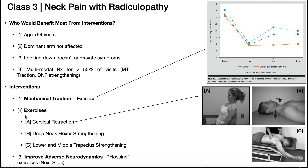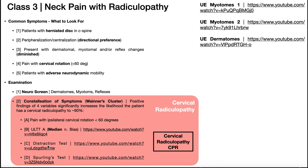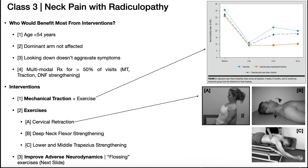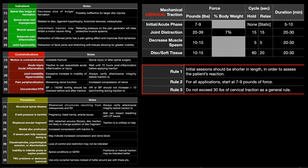For treatments supported in the literature, number one is mechanical traction. This is really beneficial if the patient had a positive distraction test, but in general it can be beneficial for anyone with cervical radiculopathy. Cervical mechanical traction mechanically gaps all the cervical vertebrae, pulling them apart, creating more space for the nerve root by opening the intervertebral foramen. For more detail on all the indications, contraindications, precautions, and parameters, check out the dedicated video on that topic.